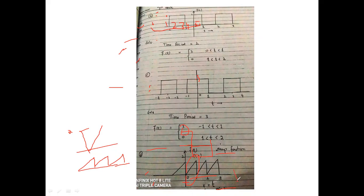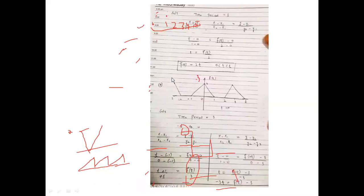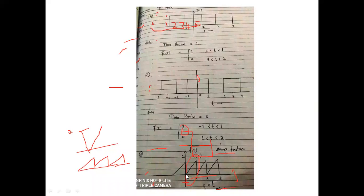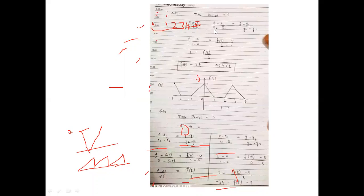To find the function for the ramp, apply the two-point formula: (x − x1)/(x2 − x1) = (y − y1)/(y2 − y1). Here x is t and y is f(t). With x1 = 0, y1 = 0, x2 = 1, y2 = 2, after substituting the values we get f(t) = 2t from zero to one. The time period is one.